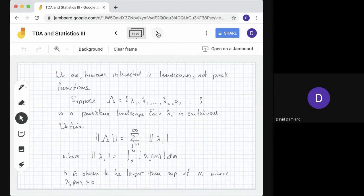Now we're interested in landscapes, not peak functions. Landscapes are a collection of functions λ1, λ2, and so on. Each λi is continuous, so we define the norm of a persistence landscape λ to be the sum from j=1 to infinity of ||λi||, where each norm is defined by an integral. We sum to infinity because we don't know whether a persistence diagram will have 20 points or 1000 points, but the functions will be zero after some finite value.